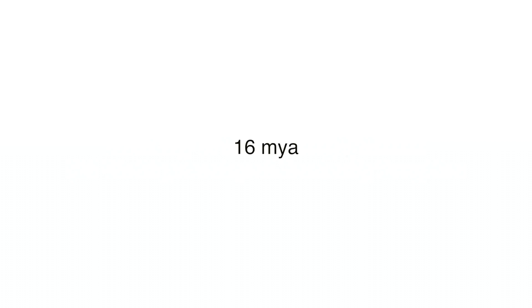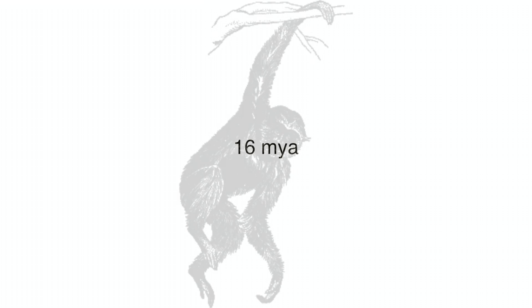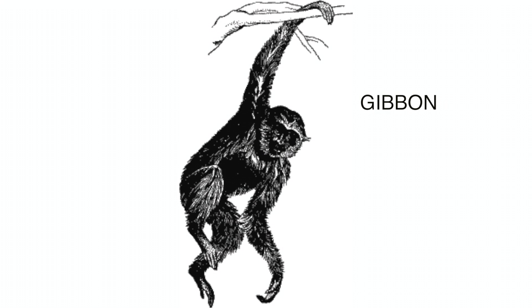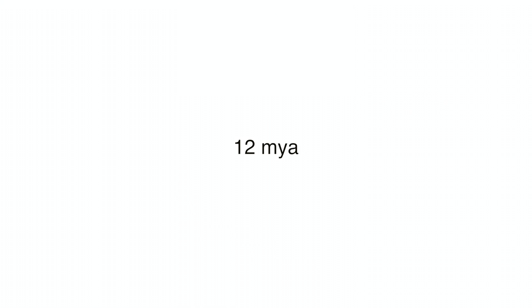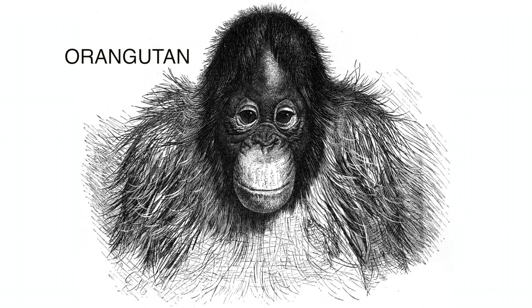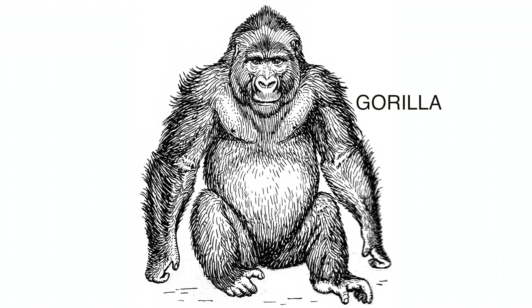Around 16 million years ago, the gibbon diverged. Then evolution took another step, and around 12 million years ago, the orangutan diverged. After that, the gorilla diverged around 8 million years ago.